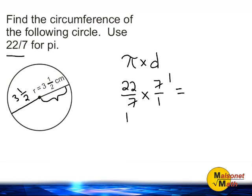What we have remaining for our numerator is 22 times 1, which is 22. On the bottom, we have 1 times 1, which is 1. 22 over 1 can be simplified to 22. So the circumference of this circle is 22 centimeters.